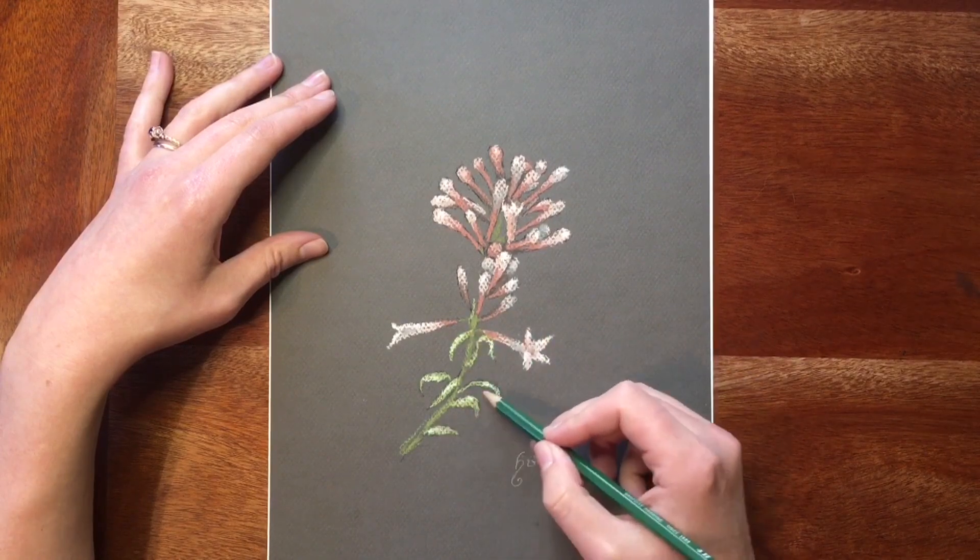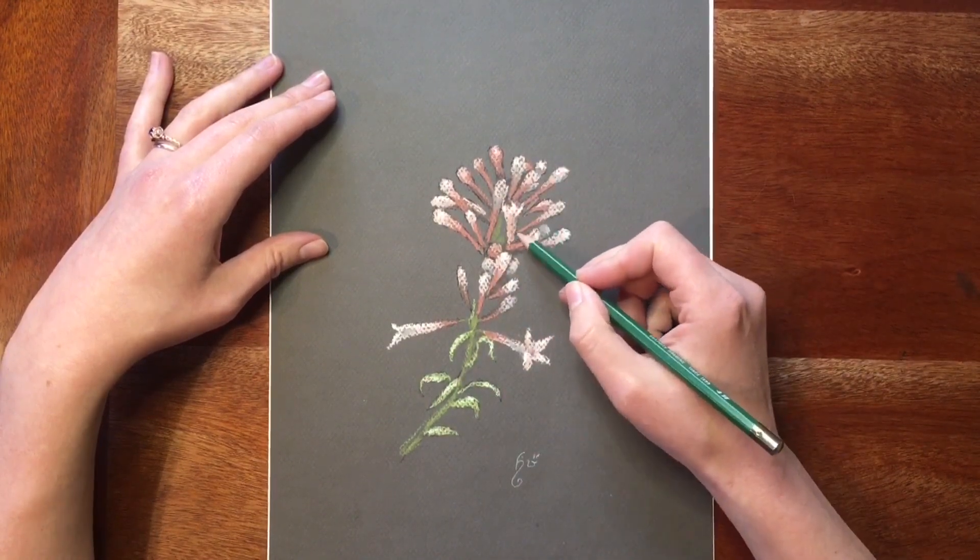So we have positive space, which is the stem, the flowers, and the leaves, and then we have the negative space.